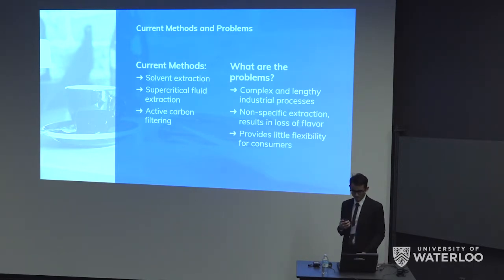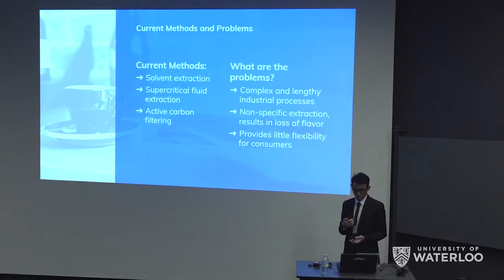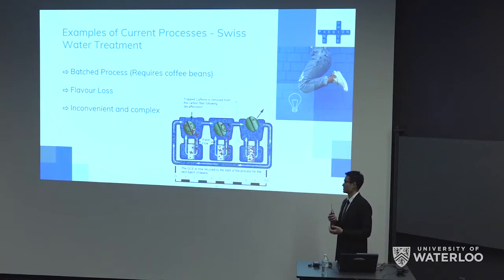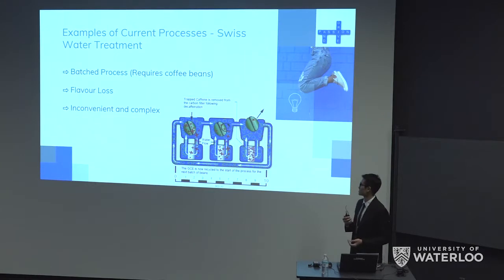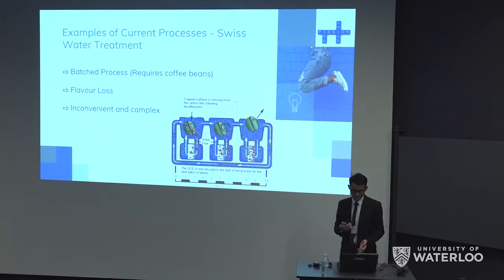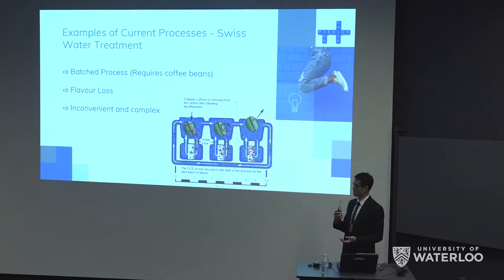Also, because these processes are all limited to industry in factories, they provide little flexibility for consumers. One of the most efficient methods of decaffeination right now is called the Swiss water process, which requires different batches of coffee beans to be filtered by activated carbon several times to remove the caffeine. However, this is still a really complex and lengthy process and also doesn't offer any flexibility for consumers.